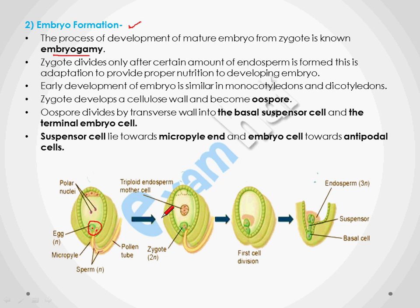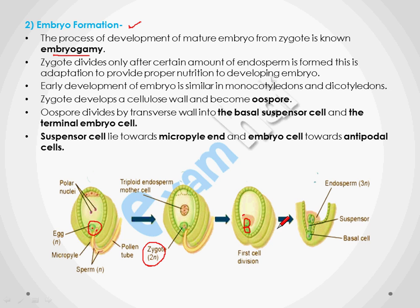After fertilization, the first division occurs in the zygote. The endosperm, visible in this diagram, provides nourishment to the developing embryo. The zygote develops a cellulose wall and becomes the oospore. This oospore has a basal suspensor cell and a terminal embryo cell.